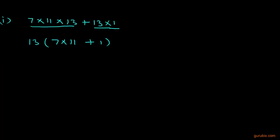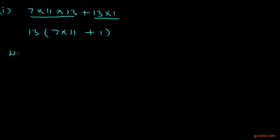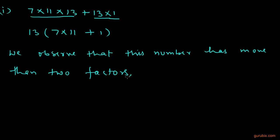And what we observe? We observe that this number has more than 2 factors because it can be divided by 13 or 2. We calculate this: this is 13×78 and this number can be divided by 2, 13 and 78.